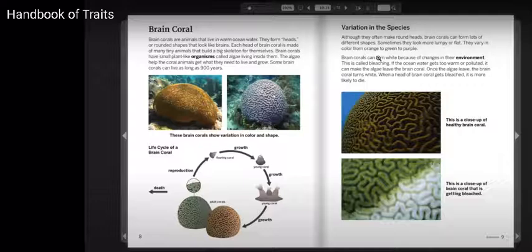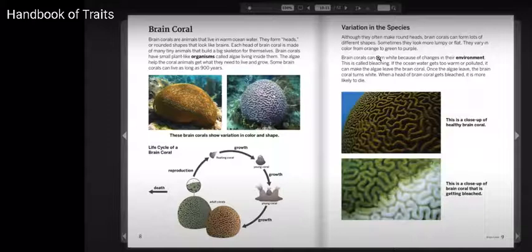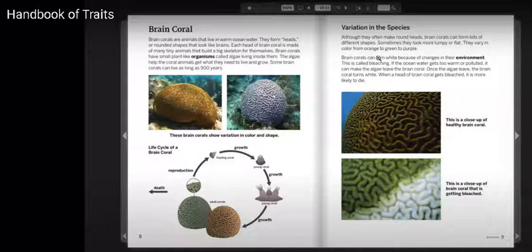Variation in the species. Although they often make round heads, brain corals can form lots of different shapes. Sometimes they look more lumpy or flat. They vary in color from orange to green to purple.